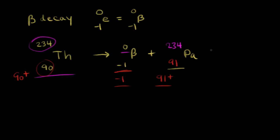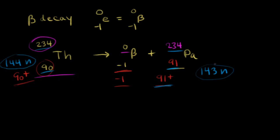What's happening in beta decay in more detail? On the left we have 90 protons. The number of neutrons is 234 minus 90, which is 144 neutrons. On the right, we have 91 protons, and 234 minus 91 gives us 143 neutrons. We went from 144 neutrons to 143 neutrons, and from 90 protons to 91 protons — we lost a neutron and gained a proton.